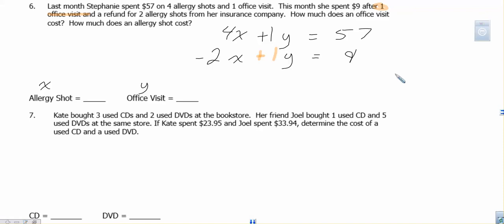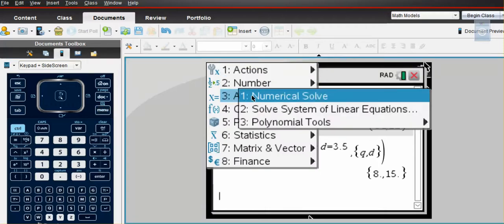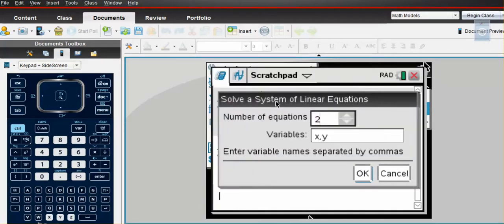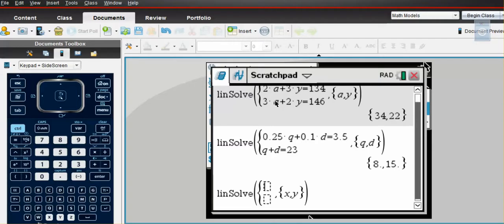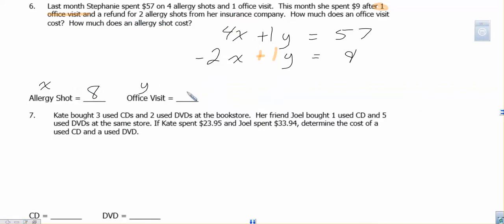And this would work out really great if you multiplied the bottom one by two. You'd have a zero pair to do elimination. But just like before, I'm going to check this real quick. So we have menu, algebra, solve a system. Two equations, X and Y. And I've got 4X plus 1Y equals $57. And we have negative 2X plus 1Y equals $9. Enter. 8, 25. So $8 per allergy shot, about $25 per office visit.